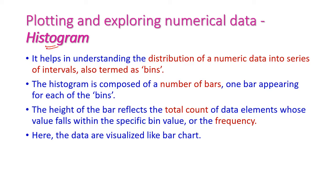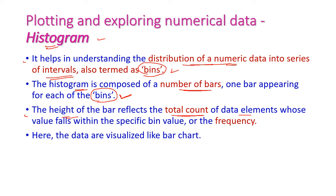The next type is histogram. The histogram is very helpful for understanding the distribution of numerical data into a series of intervals, also called bins. The histogram is composed of vertical bars — one bar appearing for each bin. The height of the bar reflects the total count of data elements whose value falls within that bin, which is otherwise called frequency. The histogram is essentially a bar chart.